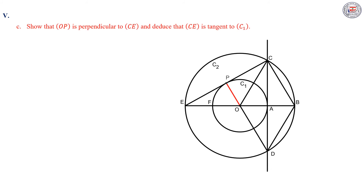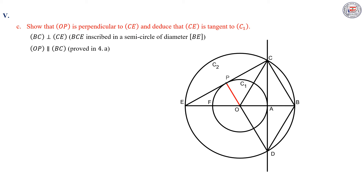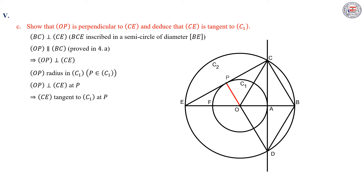In part C, we have to show that OP is perpendicular to CE and deduce that CE is tangent to the circle C1. We have BC perpendicular to CE since BC is inscribed in a semicircle of diameter BE, so angle BCE is a right angle at C. And we have OP parallel to BC, proved in part 4A. Then we can deduce that OP is perpendicular to CE, since if two lines are parallel, every perpendicular to one of them is perpendicular to the other. And we have OP as a radius in the circle C1 since P belongs to the circle C1, and OP is perpendicular to CE at P. Therefore, CE is tangent to the circle C1 at the point P.